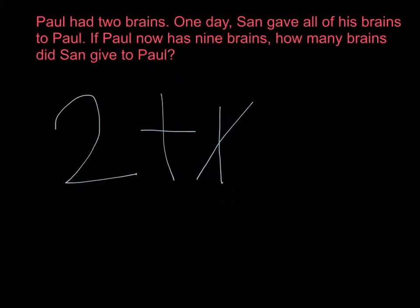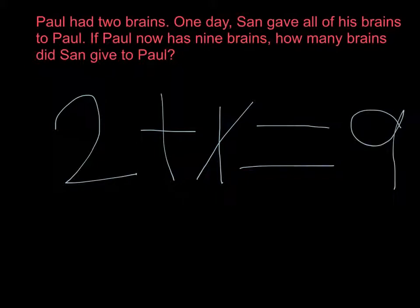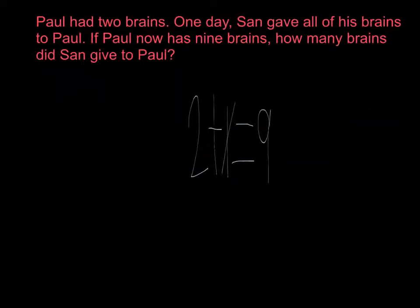And now Paul has nine brains, so it's nine. This gives us the equation 2 + x = 9. This is important because it is the first step for solving a word problem.